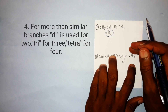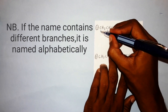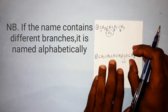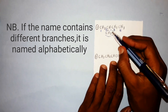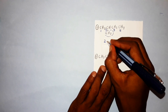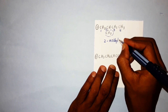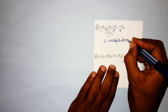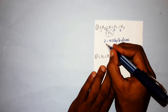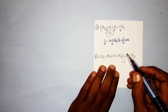For the first example, the longest carbon chain gives a parent name of butane (four carbons). The branch lies at carbon-2. Therefore the name is 2-methylbutane, where butane is the parent name, 2 is the position, and methyl is the branch.